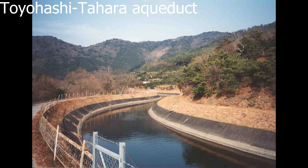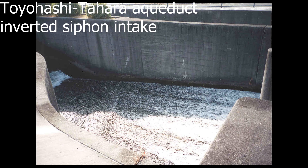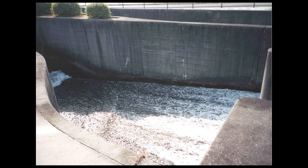Here we illustrate two modern inverted siphon systems. First, the Toyohashi Tahara Aqueduct in Japan. The aqueduct brings water supply to the Tahara Peninsula. The second photo shows the intake of the inverted siphon, which carries water beneath a major roadway.